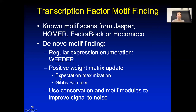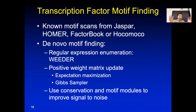We talked about using expectation maximization and Gibbs sampler approaches to identify those motifs. Later on, people also look at evolutionary conservation and motif modules, which means many transcription factors bind in a short, say one to two hundred base pair region — a concentrated region where transcription factor binding sites happen. They try to use this to improve the signal to noise.